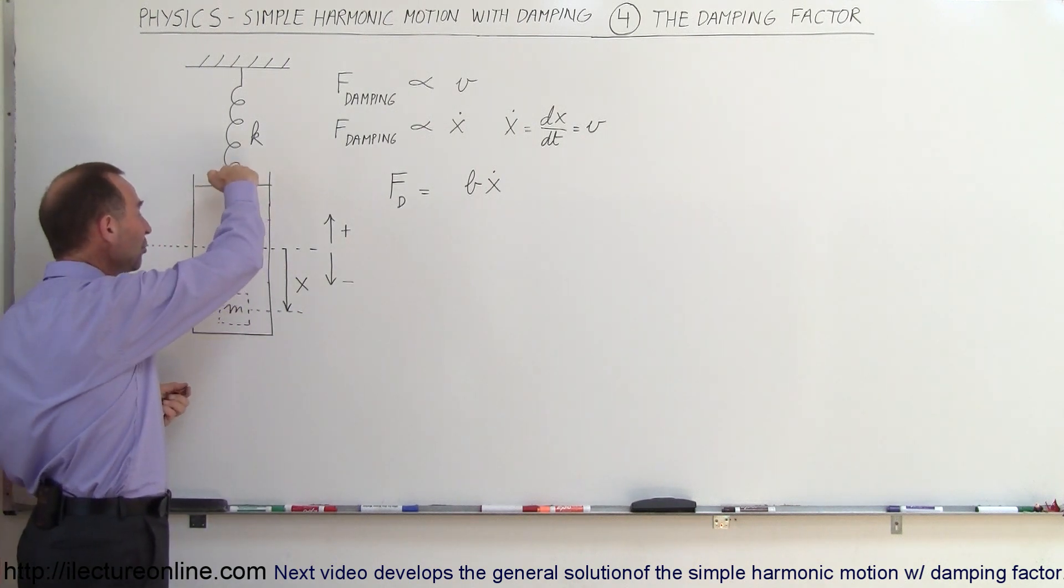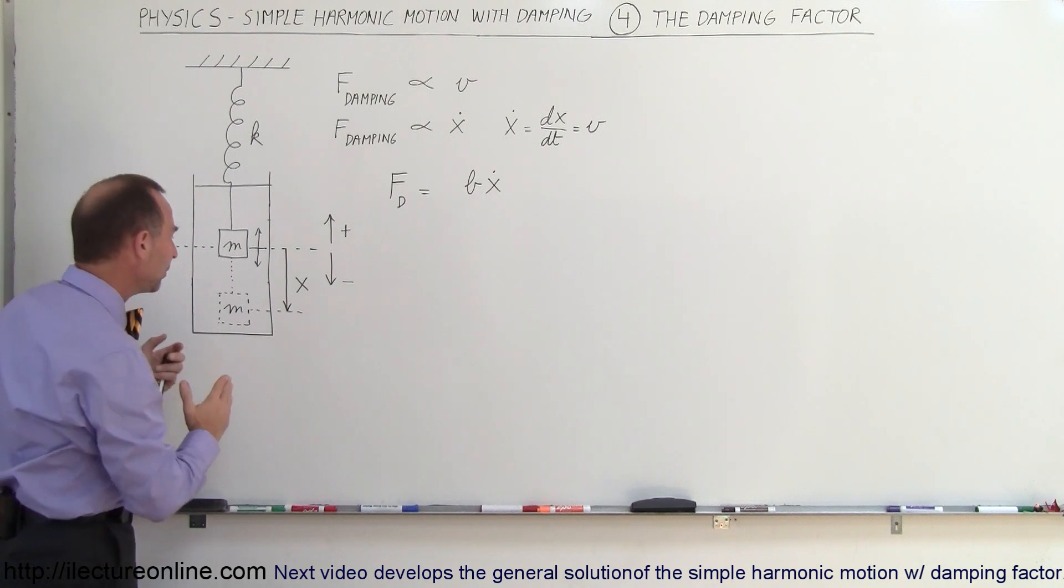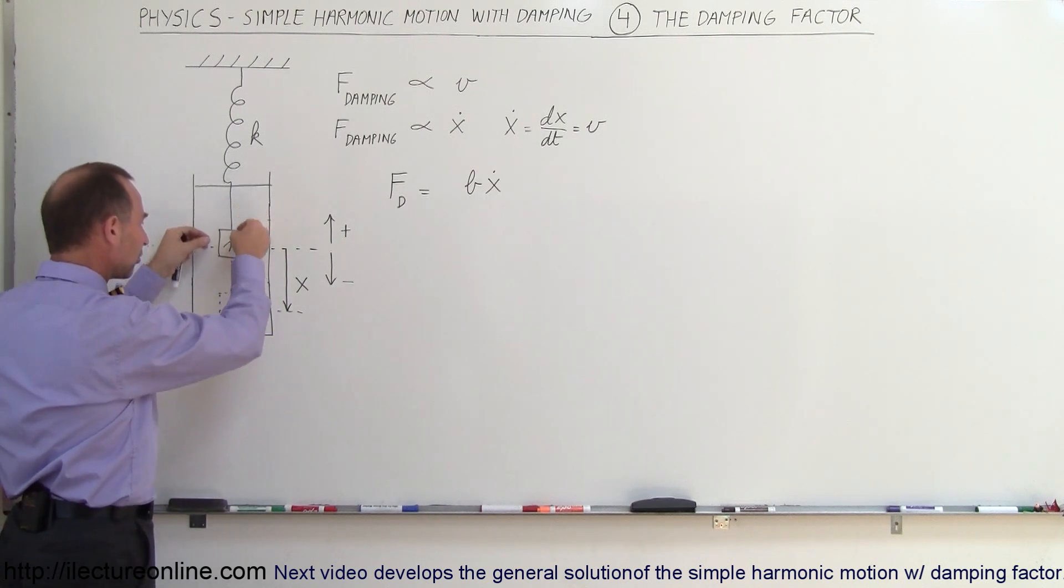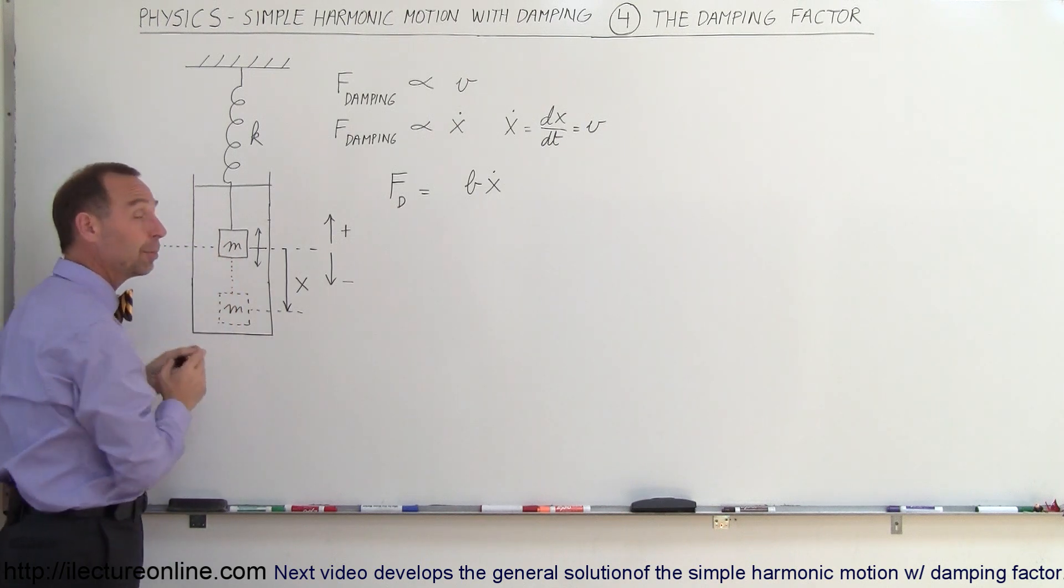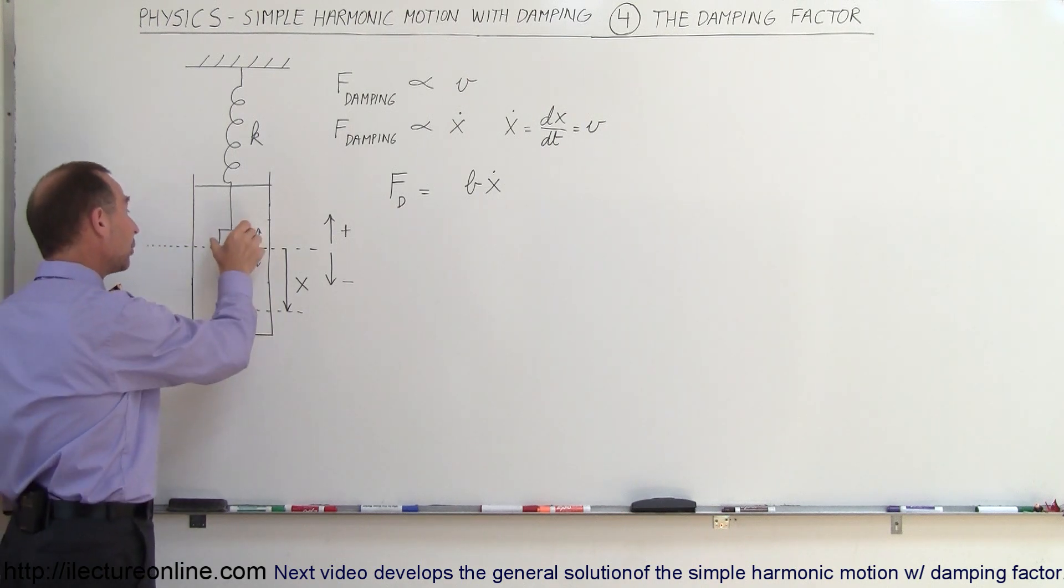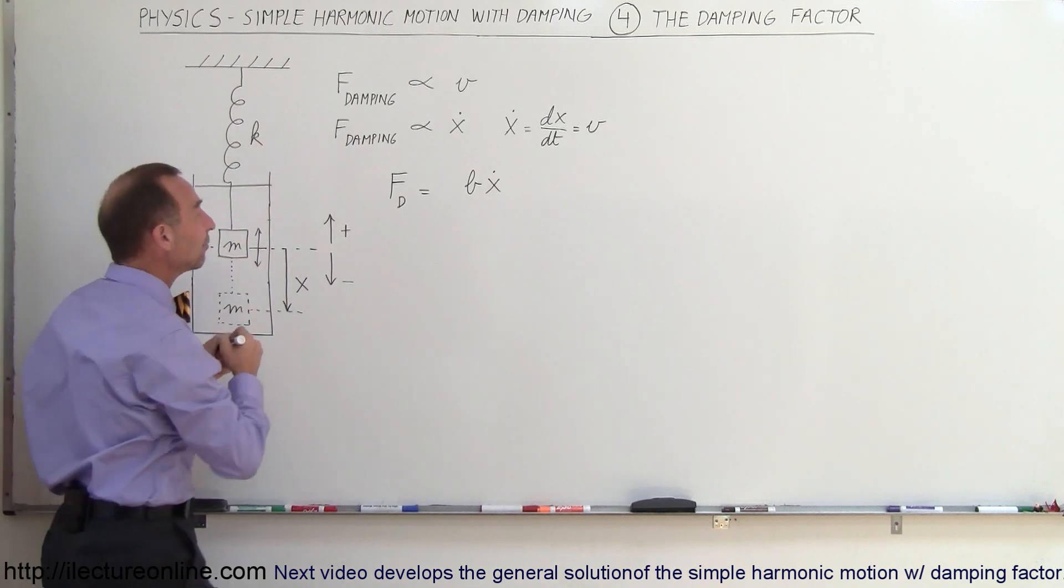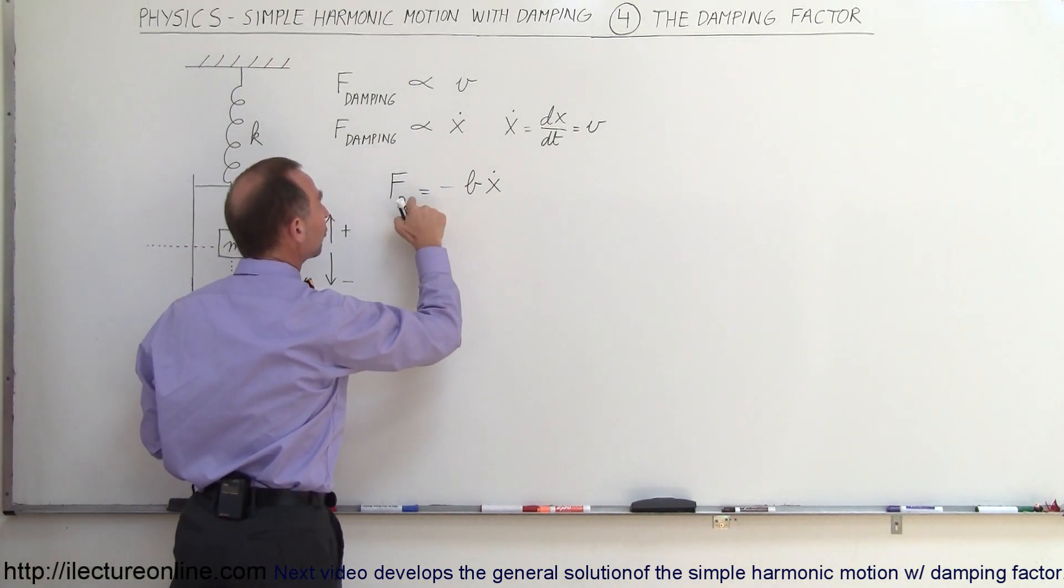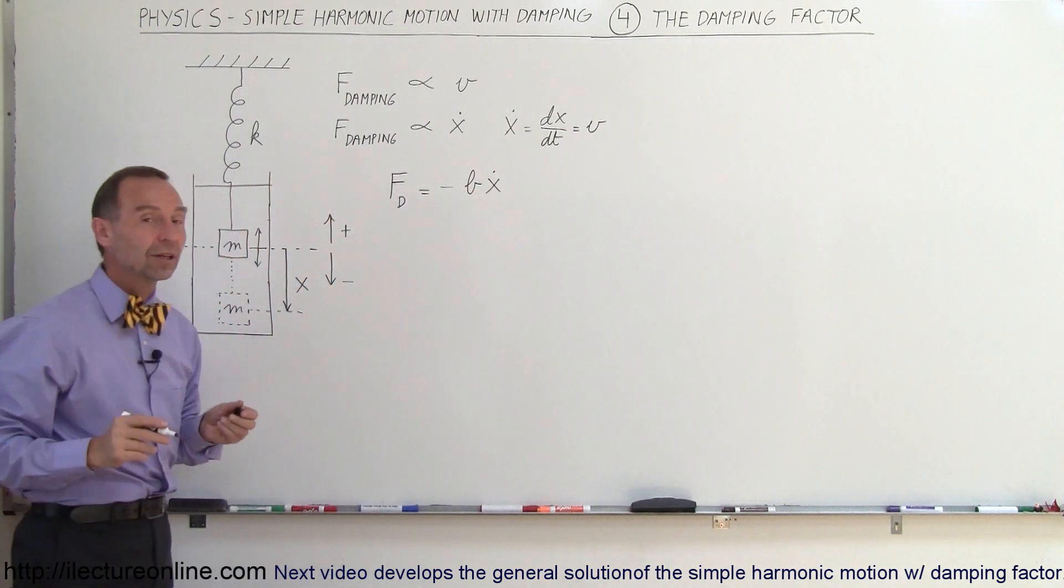Notice that when the object is moving downward, the resistive force, almost like a friction force, will be acting in the opposite direction. As the object's moving downward, the damping force will be pushing upward. And if the object is moving upward, the damping force will be acting downward. So I need a negative sign here so that the direction of force will be opposite to the direction of the velocity of the object.